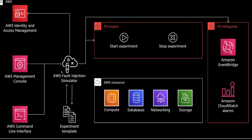If we talk architecture-wise, Fault Injection Simulator can be accessed from your console and command line. Like any other service, it needs a role because FIS will be talking to your EC2, database, SSM, RDS, ECS, and EKS. It needs to assume a role so that it can perform actions on these services, which is why it's linked with IAM.